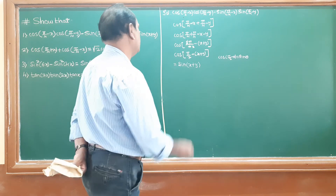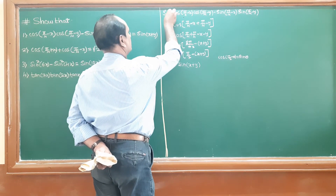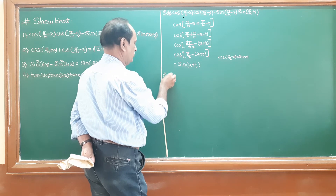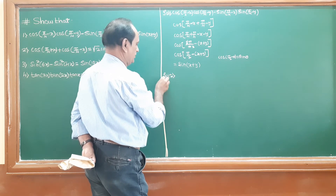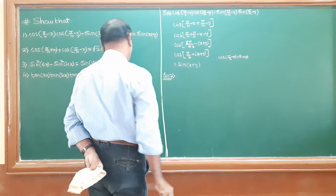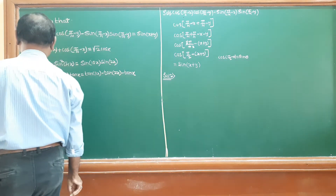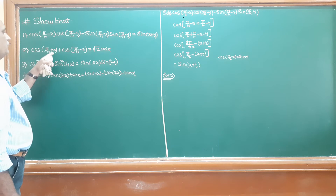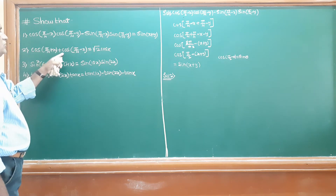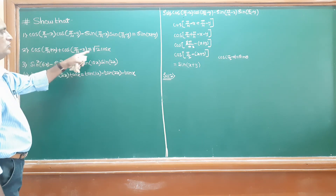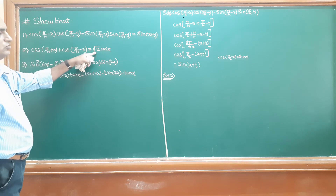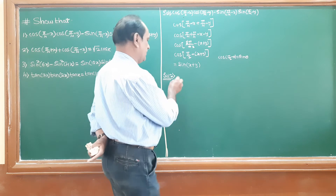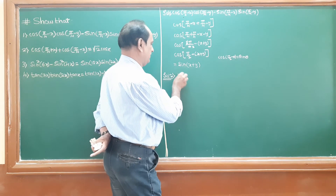Come to the solution for the second problem. The problem is: cos(π/4 + x) plus cos(π/4 minus x) is equal to root 2 · cos x. Starting with LHS, that is cos(π/4 + x) plus cos(π/4 minus x).